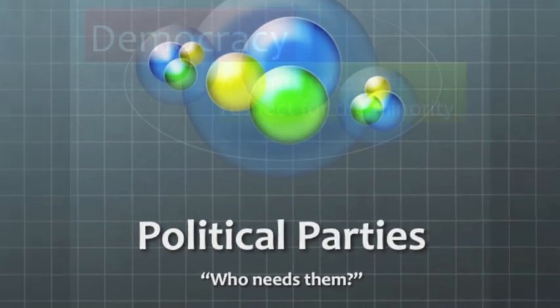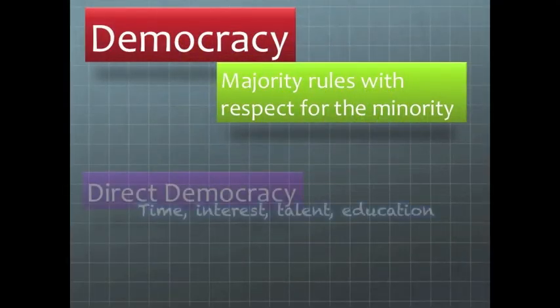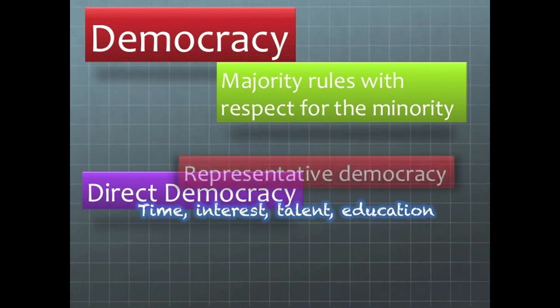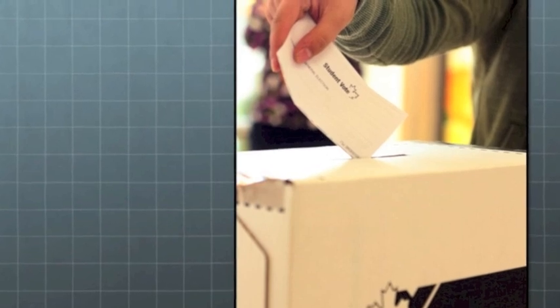In a previous video we talked about democracy, how it's ruled by the people, but most people just don't have the time or interest to actually rule effectively. So instead we have representative democracy, where the community chooses one person to do all that work for them.